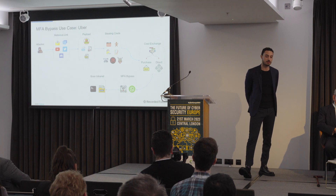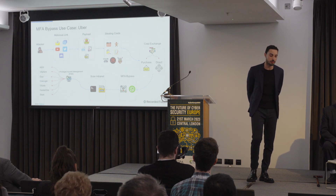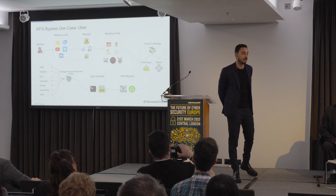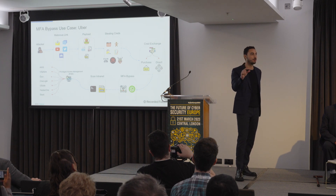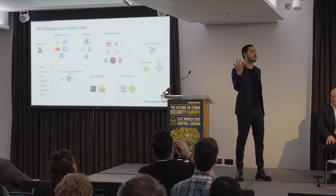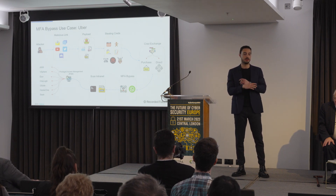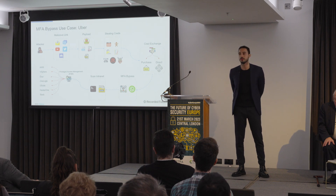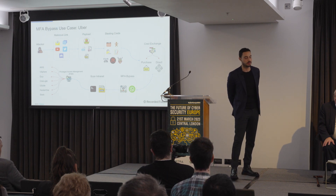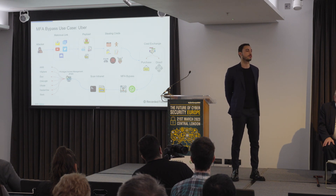Then the person got into the Uber intranet. They then performed some privileged access management lateral movement — they happened to find a user with an admin login to their privileged access management, and from there they just went everywhere. The threat actor actually posted on a Slack channel in Uber saying, 'Uber's been breached, hi my name is XYZ, Uber doesn't pay its drivers enough.' Real life example, huge company, very easy to do. The threat actor that did this was 18 years old and was part of a gang called Lapsus Group. All stemmed from a stolen credential bought online.